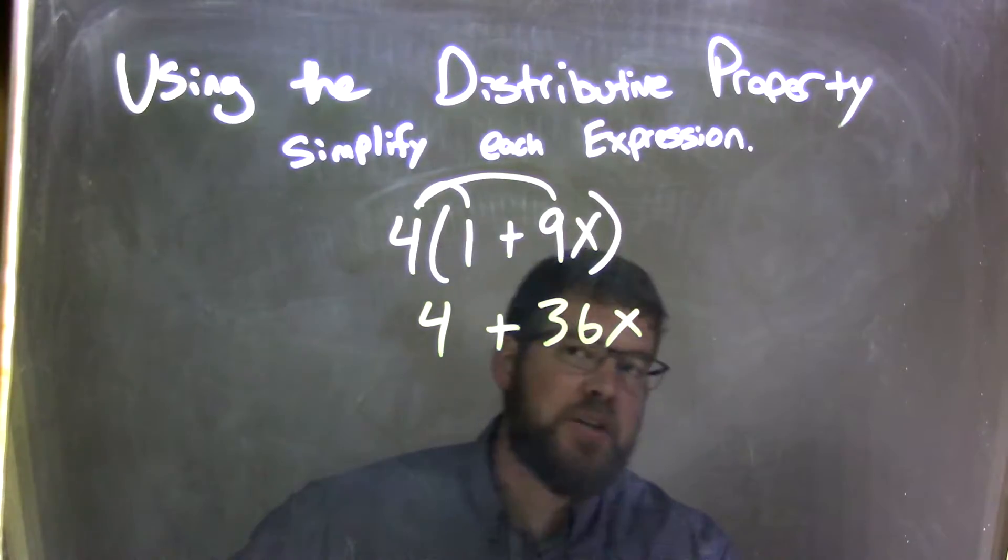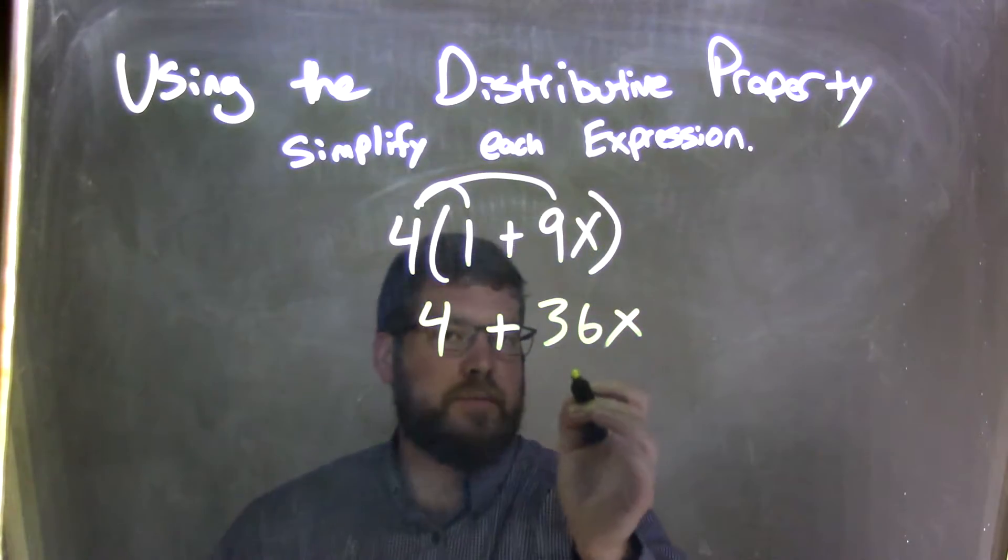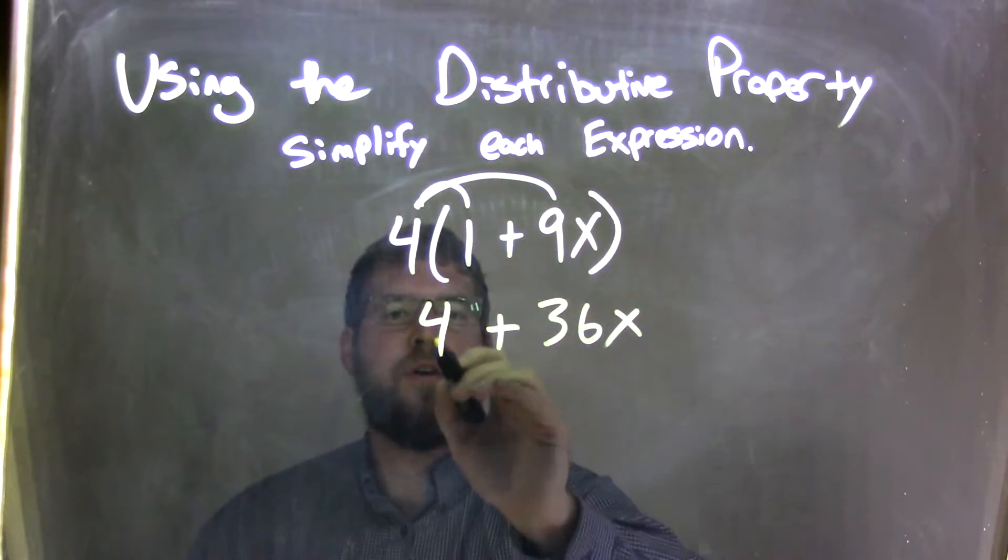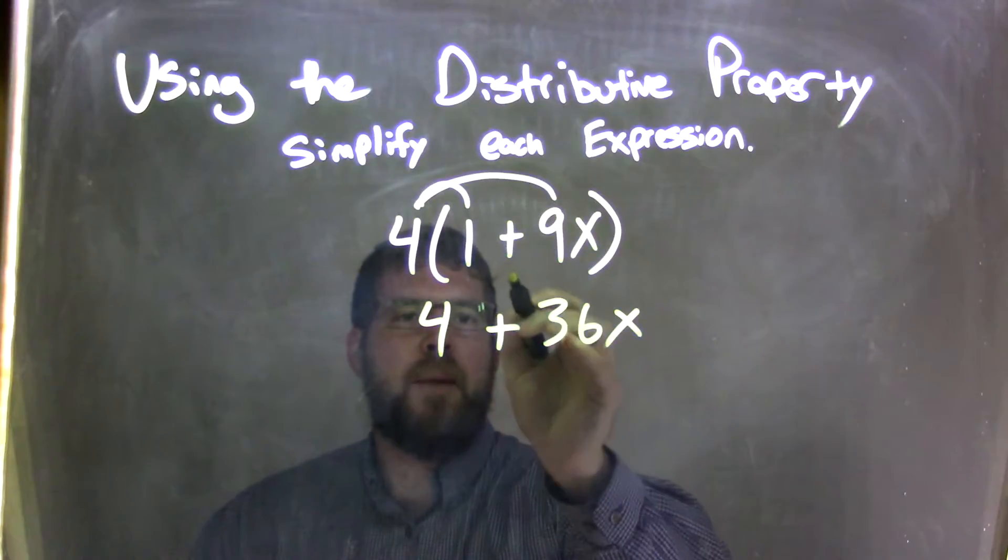And that is actually our final answer. There's no way we can simplify. These are not like terms. So let's recap. We have 4 times 1 first, brought down that 4, brought down that plus sign.